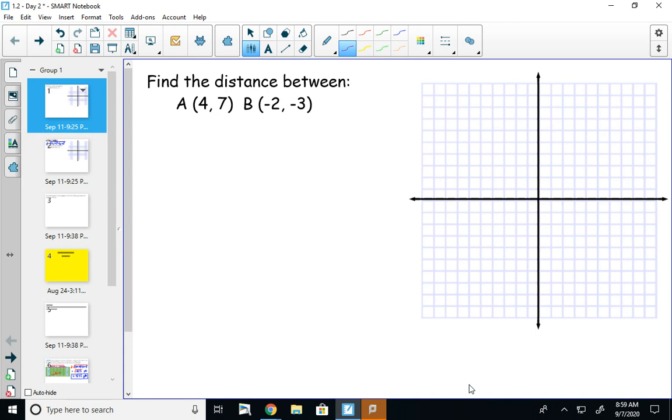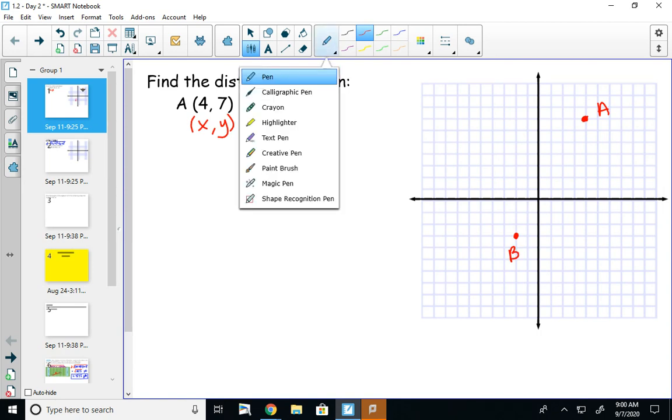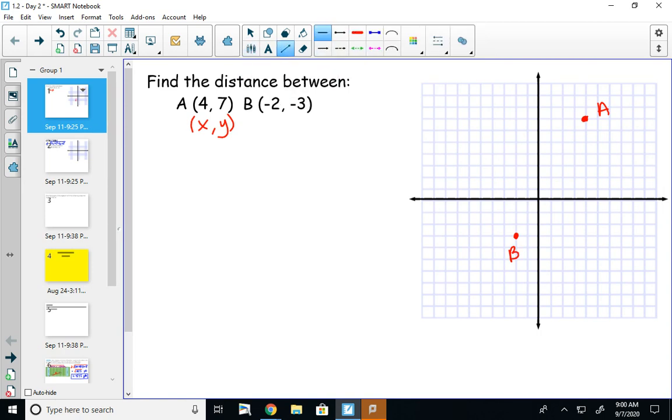In this first example, we're finding the distance between point A, which is at (4, 7). These points look like X, Y, so I'll go over 4 and up 7. And B is at (-2, -3), so I'll go back 2 and down 3. And I want to find the distance between these two points.